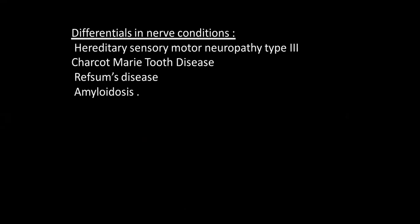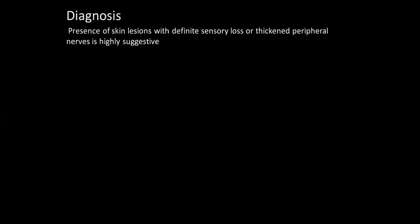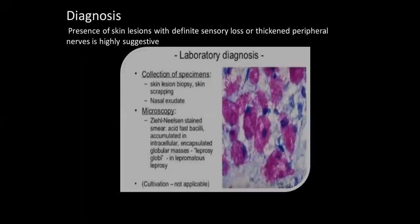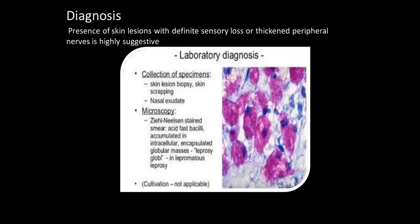Differentials in nerve conditions are these. How to diagnose: presence of skin lesions with definite sensory loss or thickened peripheral nerves is highly suggestive. Laboratory diagnosis: collection of specimen from biopsy sample skin, from scraping nasal exudate, Ziehl-Neelsen staining, AFB accumulated in intracellular encapsulated globular masses — leprosy globi — as they are called. Cultivation is not possible.